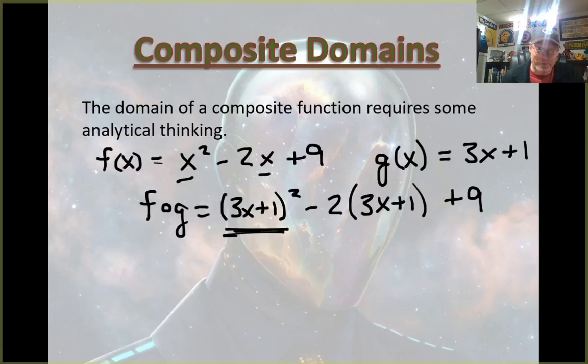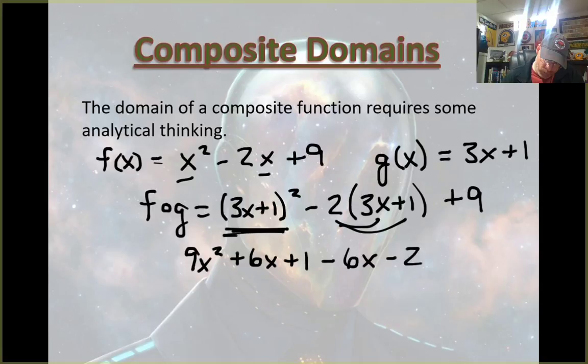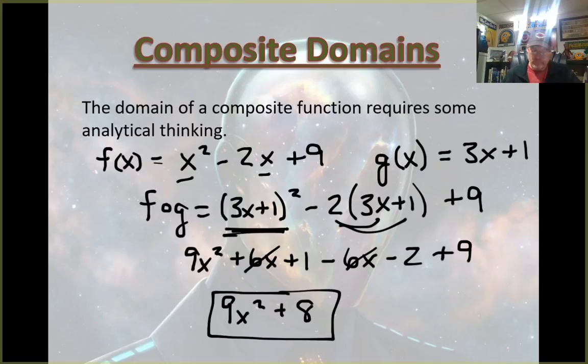All right, and remember to do this correctly: 9x² + 6x + 1 minus, and distribute that, 6x - 2 plus 9. And you got 9x² plus, those two cancel out, so what do we got here? Plus 8. Okay, my point was that when you have a function that has two different x's, you have to plug it in to both x's.